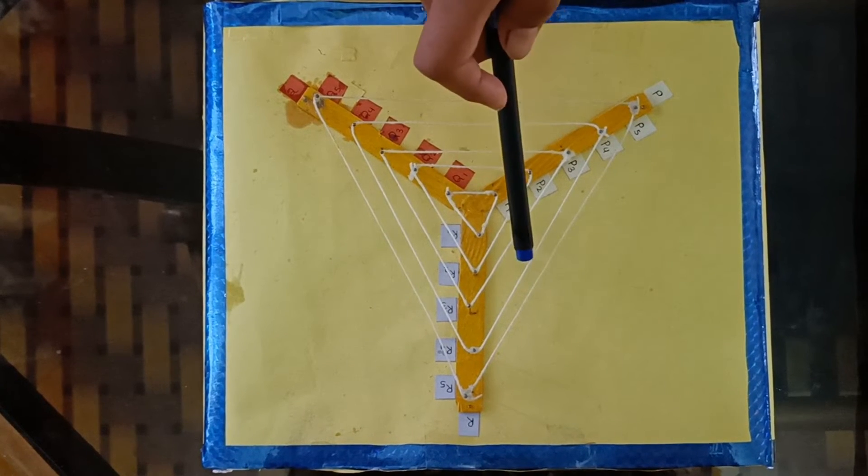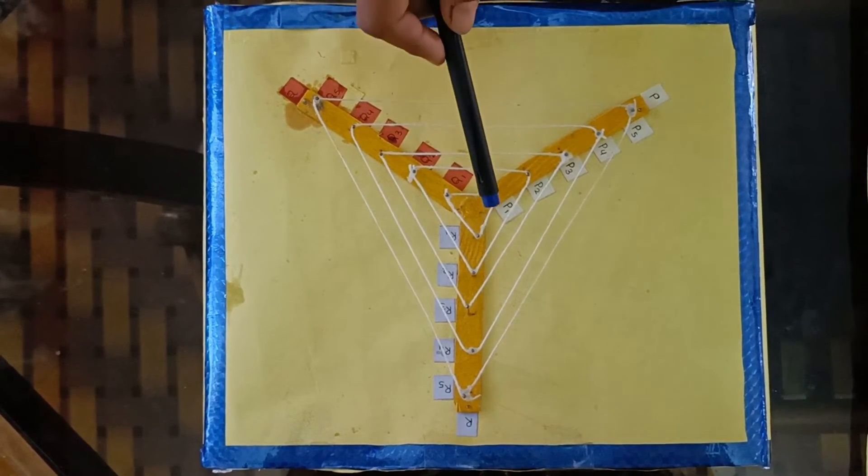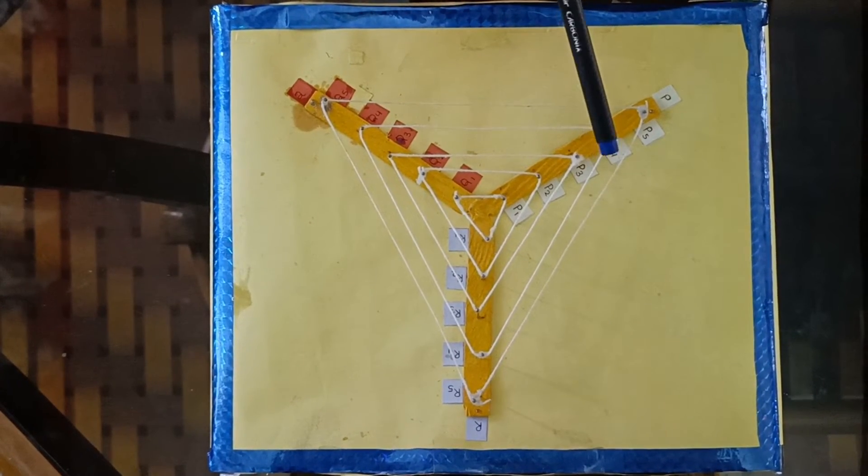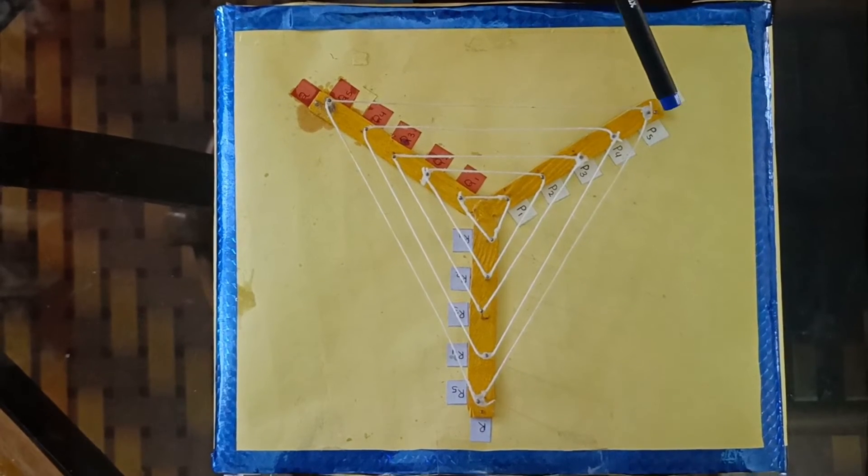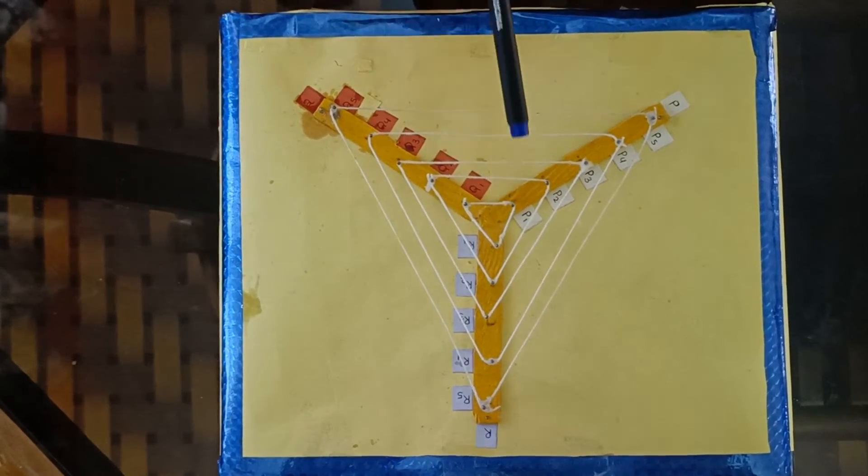Now we can observe that on each of the strips P, Q, R, nails are positioned at equal distance such that P1P2 is equal to P2P3 is equal to P3P4 is equal to P4P5 on strip P, and the same for Q and R strips.